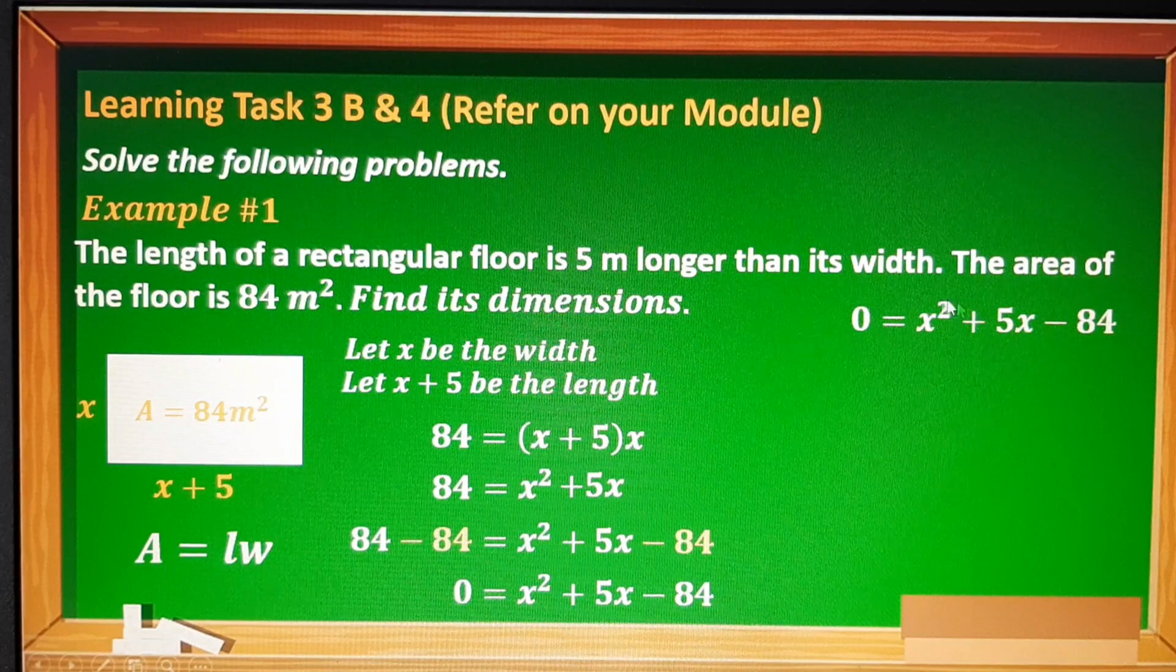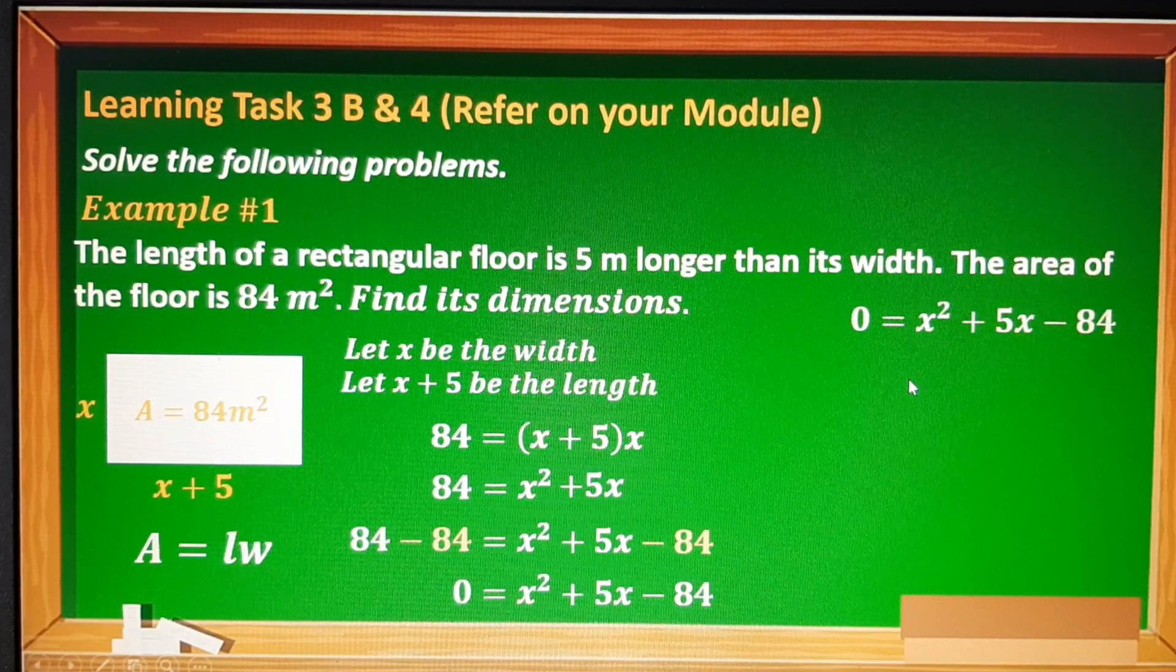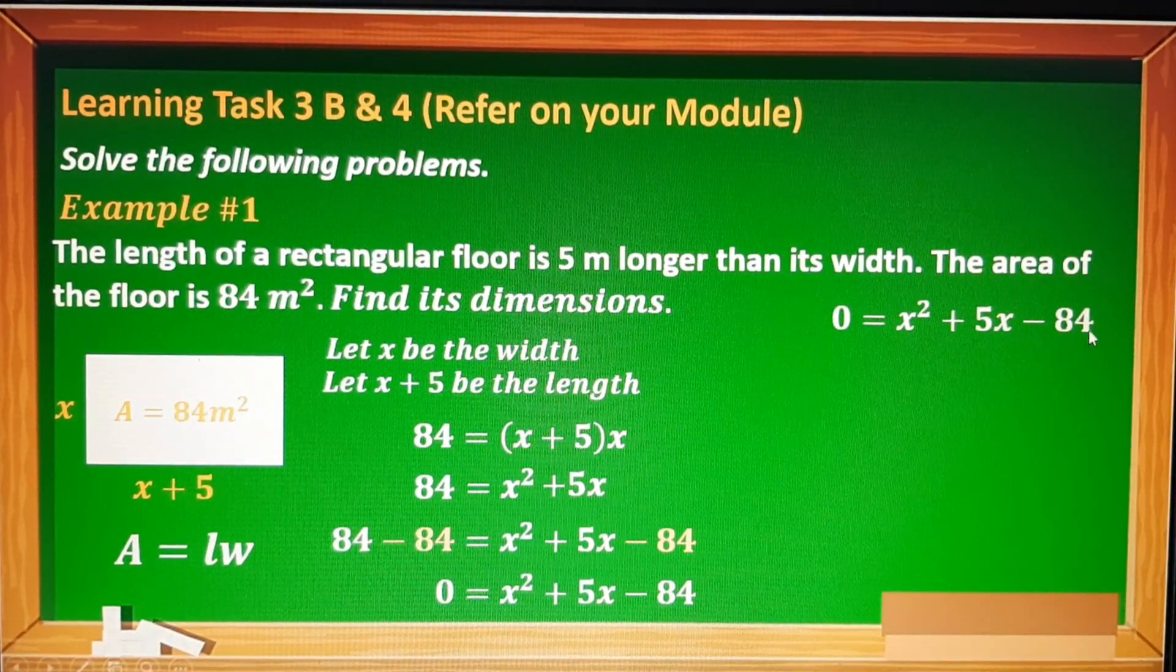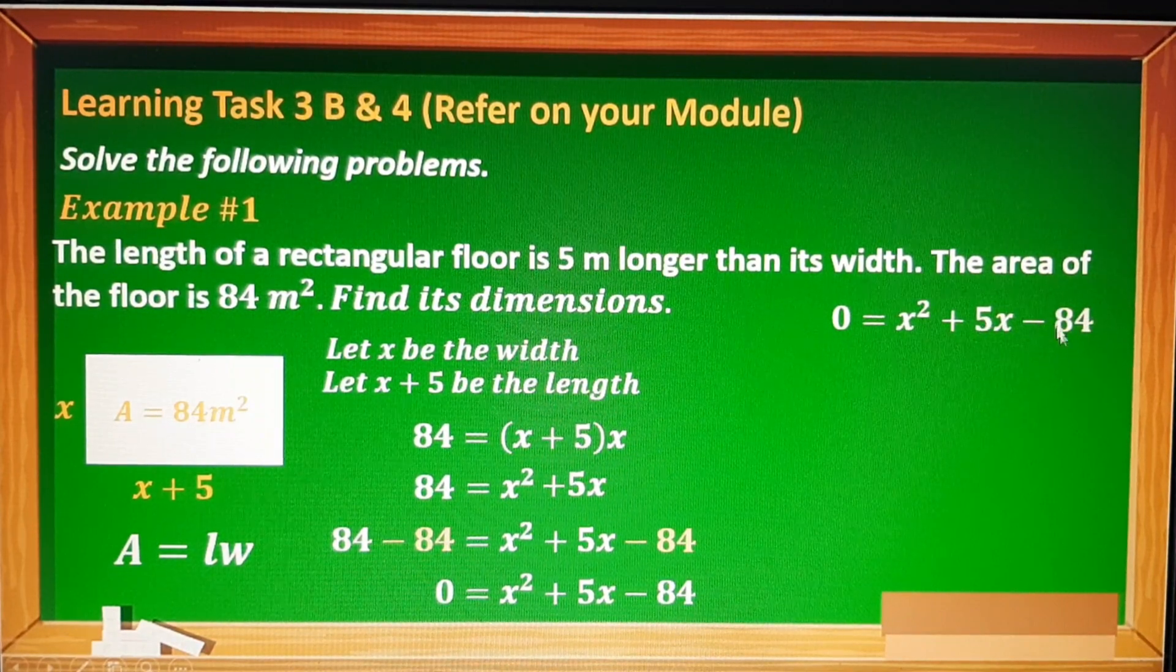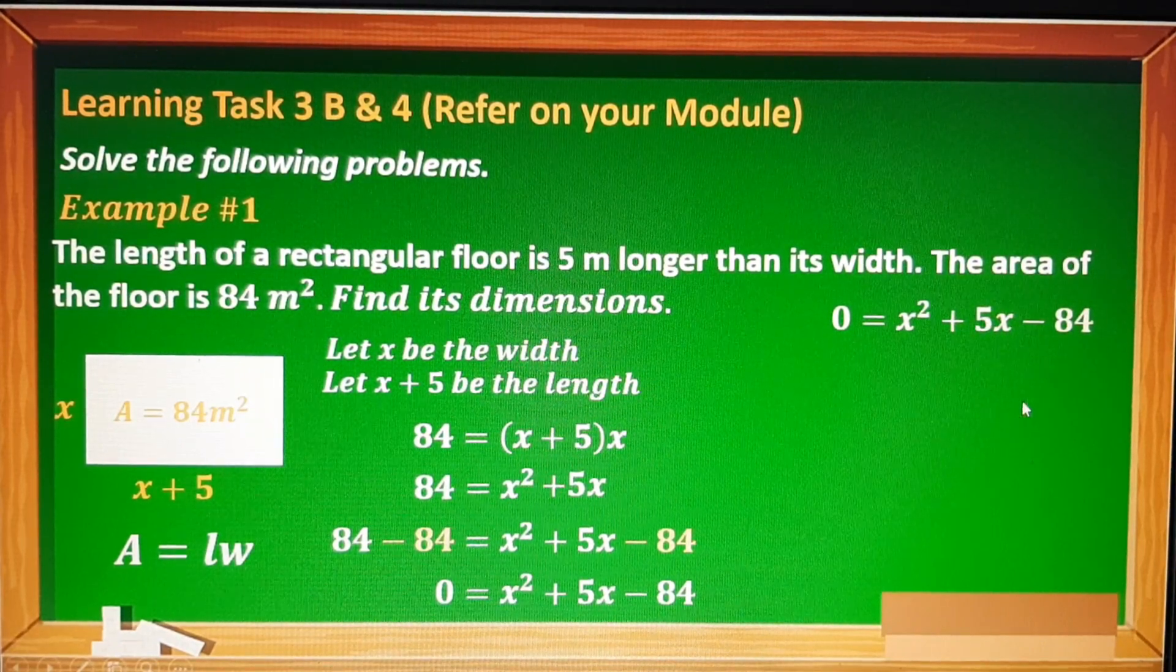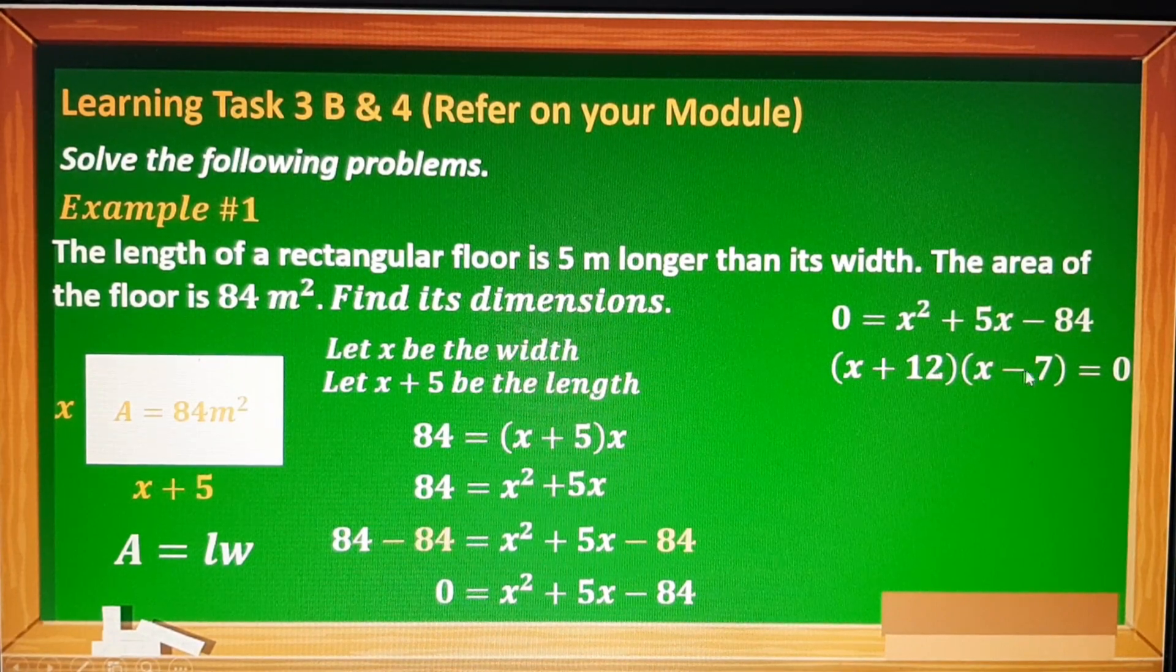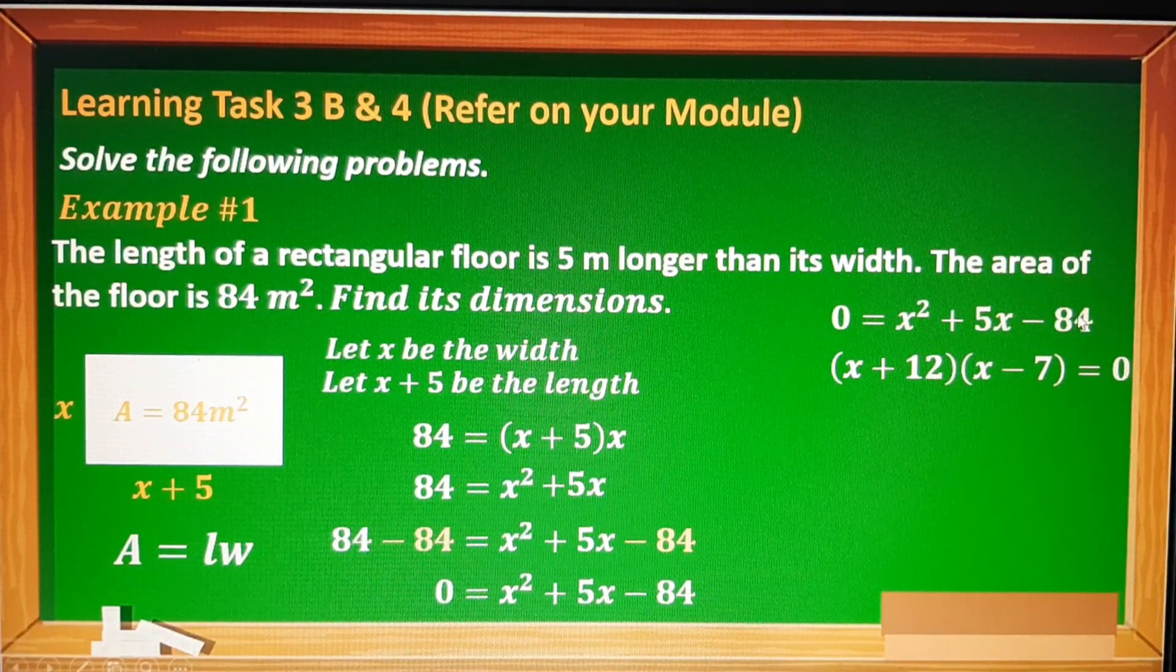To find its dimension, we will solve this quadratic equation by using factoring. You can use any method you want. For this, I will use factoring. Sa factoring, mag-iisip kayo ng factor na kapag in-add natin yung factor ng 84, ng negative 84 na yun, ang kakalabasan niya ay positive 5. So eto yung factor niya. 12 times negative 7 is negative 84, and 12 minus 7, the answer is positive 5. So eto yung factor ng equation na ito.